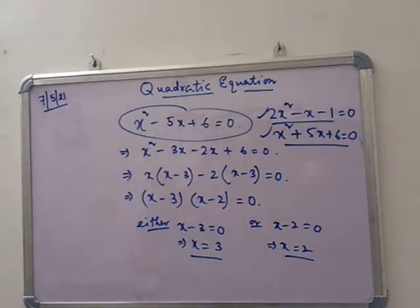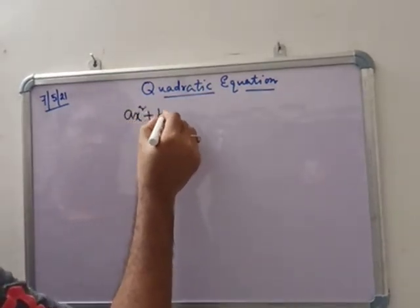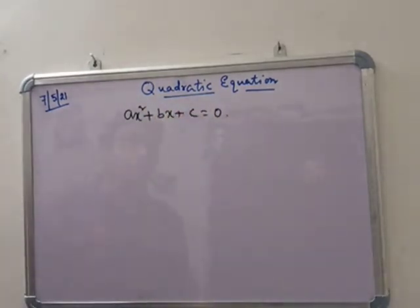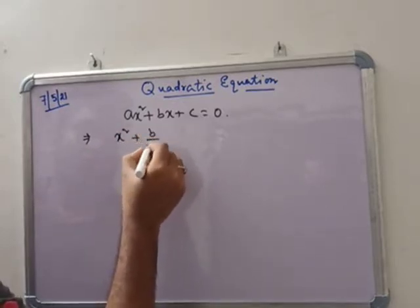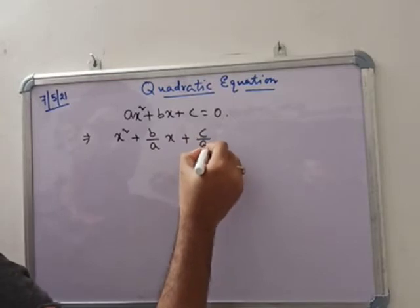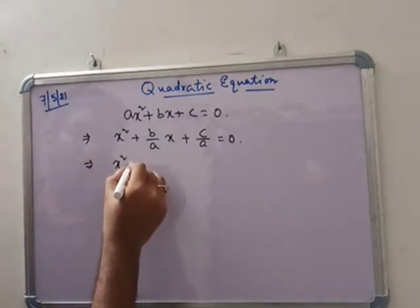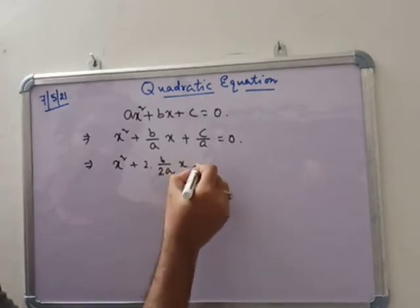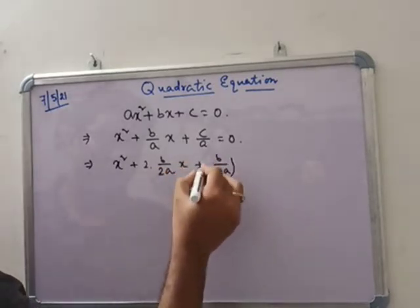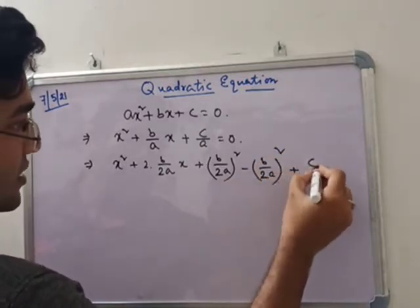Let's see how Sridharacharya's formula is introduced. We know that ax squared plus bx plus c equals 0 is the standard form of a quadratic equation. We can rewrite it as x squared plus b/a times x plus c/a equals 0. Then we write x squared plus 2 times b/(2a) times x plus (b/2a) squared minus (b/2a) squared plus c/a equals 0.